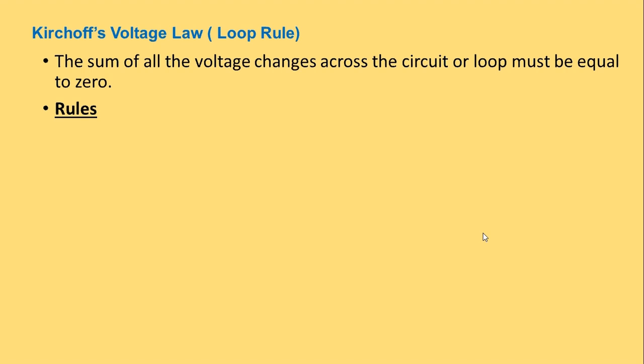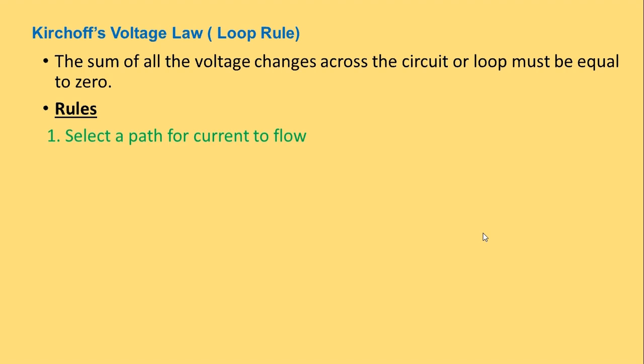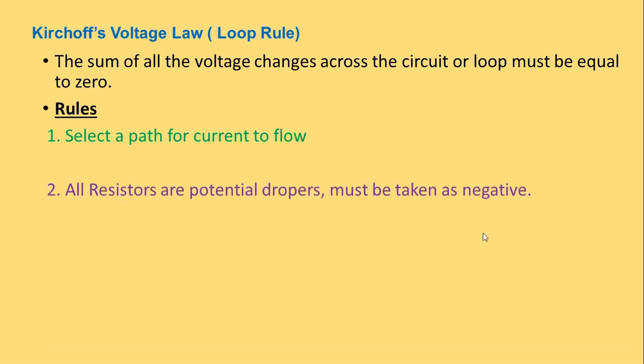Now I am going to teach you three important and simple rules. Some teachers or textbooks use different rules, but these are the simplest rules by which we can easily apply Kirchhoff's Voltage Law to any circuit. Rule number one: select a path for current to flow — whatever path you select, you can manage. Rule number two: all resistors are potential droppers and must be taken as negative, because a resistor drops potential and consumes energy. Whenever you encounter a resistor in your path, take it as negative.